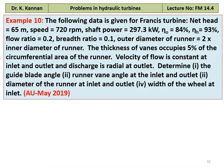Example number 10 from May 2019 question paper. The following data is given for a Francis turbine: net head 65 meters, speed 720 RPM, shaft power 297.3 kilowatt, overall efficiency 0.84, hydraulic efficiency 93%, flow ratio 0.2, breadth ratio 0.1. Outer diameter of the runner equal to 2 times of the inner diameter of the runner. Thickness of the vane occupies 5% of the circumferential area of the runner. Velocity of the flow is constant at the inlet and the outlet. Discharge is radial at the outlet. Determine the inlet guide blade angle, runner vane angle at the inlet and the outlet, diameter of the runner at the inlet and the outlet, and width of the wheel at the inlet.